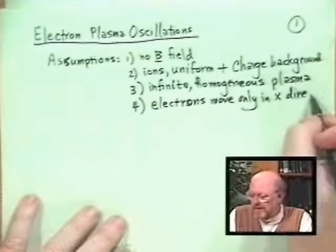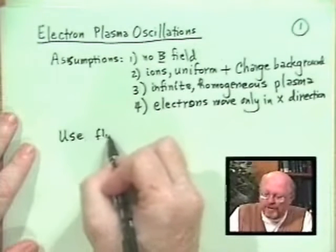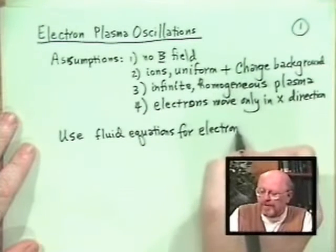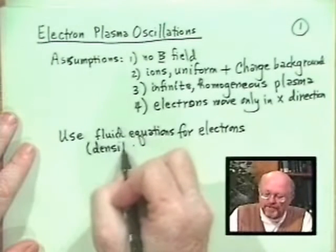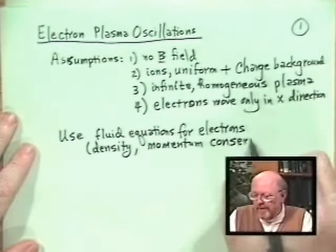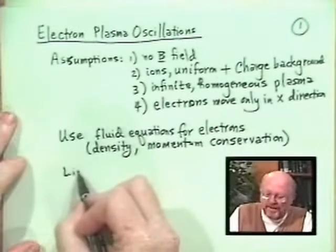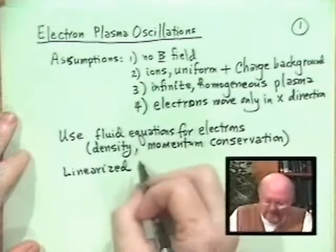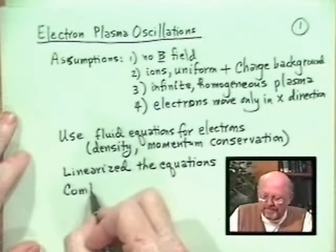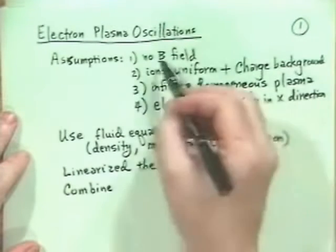We assumed electrons move only in the x direction. Our strategy was to use fluid equations for electrons — basically the density conservation equation and the momentum conservation equation. We then found an equation we couldn't easily deal with because it was complicated and nonlinear, so our next step was to linearize the equations and then combine them — the density and momentum conservation equations plus Gauss's law, since we were dealing with electrostatics.